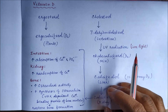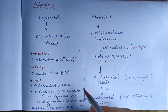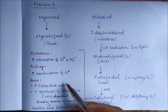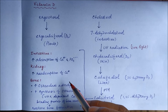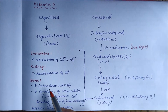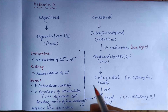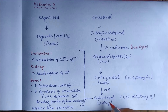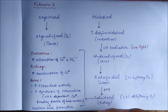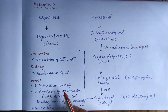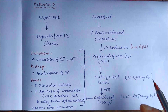In bone we have two types of cells: osteoblasts and osteoclasts. Osteoblasts are the bone-forming cells — they help in making bone and deposit minerals and collagen. Osteoclasts, on the other hand, are responsible for bone resorption. Calcitriol increases osteoclast activity, increasing bone resorption — it causes destruction of the matrix and removes minerals and collagen from the bone.